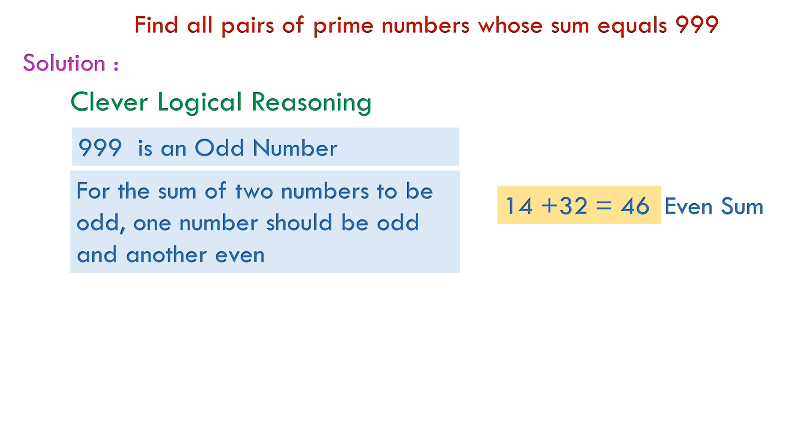Similarly, two odd numbers, let's say 11 and 15, gives us 26, also an even sum.